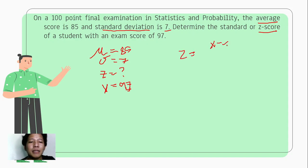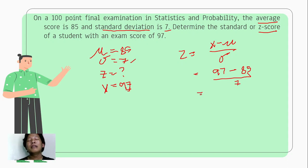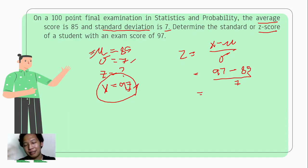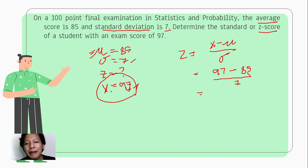Given the formula, we have z equals x minus mean divided by standard deviation, so that is 97 minus 85 divided by 7. From the numerator alone we can already determine whether the normal score is above or below the mean. If the normal score is greater than the mean, it is above the mean. If the normal score is less than the mean, it is below the mean.